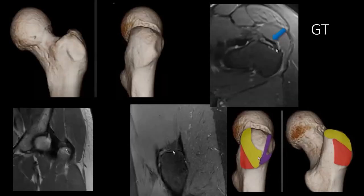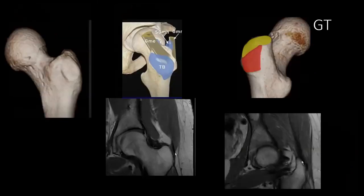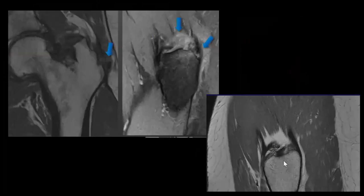Now we'll discuss another very common problem in the hip: gluteal tendinopathy. We should know the anatomy. At the trochanter, the anterior facet is for the gluteus minimus, the middle or lateral facet is for the gluteus medius. In the posterior superior facet there is also gluteus medius attachment, and in the posterior facet there is only the trochanteric bursa. Gluteus medius has two attachments. So: anterior facet — gluteus minimus; lateral facet — gluteus medius; posterior superior — gluteus medius; posterior facet — only trochanteric bursa.